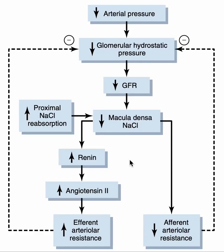Today we will talk about the role of macula densa in the autoregulation of glomerular filtration rate. Glomerular filtration rate changes with a change in arterial pressure. When the arterial pressure is decreased, this results in a decrease in glomerular filtration rate. The kidney should maintain the glomerular filtration rate because low GFR can lead to harmful consequences.